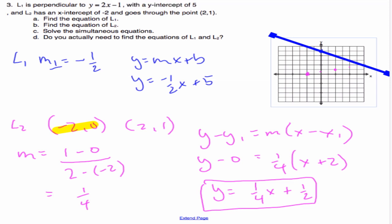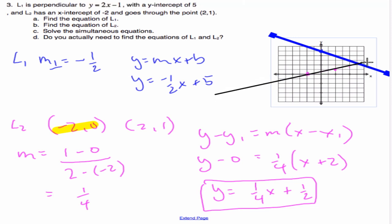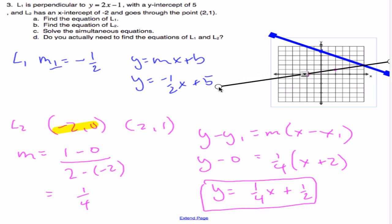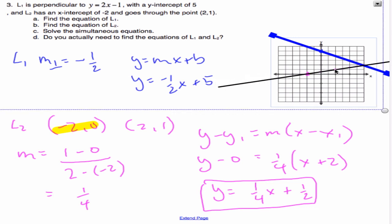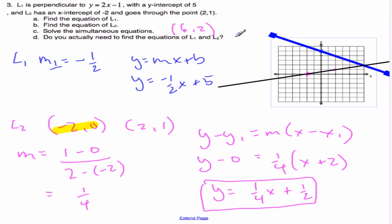Now if I draw that line in black, we are looking for the point of intersection. It looks like that point of intersection is right there: 6 comma 2. So solving the simultaneous equations graphically gives us 6 comma 2.